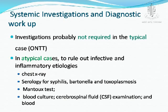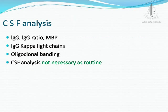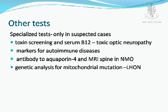According to the ONTT, other investigations are not really required in typical optic neuritis, but in atypical cases, appropriate tests must be performed to rule out other causes. CSF analysis, while not required per the ONTT, provides supportive evidence through IgG levels, myelin basic protein, and oligoclonal banding to substantiate a diagnosis of MS. NMO antibodies are especially important to rule out neuromyelitis optica, and genetic analysis for LHON should be performed when indicated.